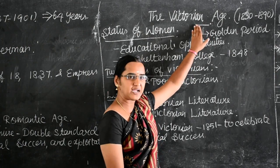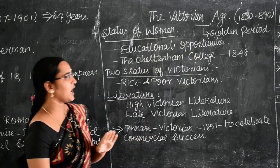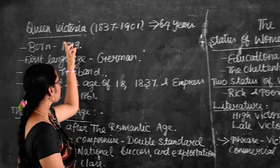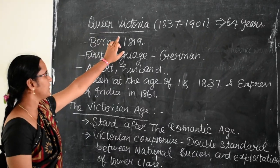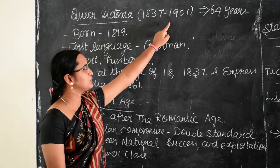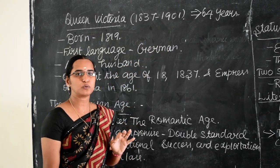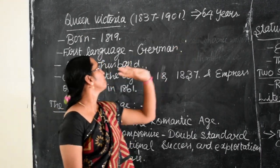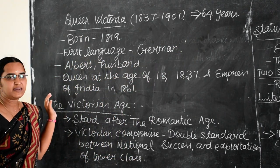Before going to that era, we have to know who is Queen Victoria and her reign. The reign of Queen Victoria is 1837 to 1901. She was the only queen who ruled over England for 64 years. She was born in 1819.